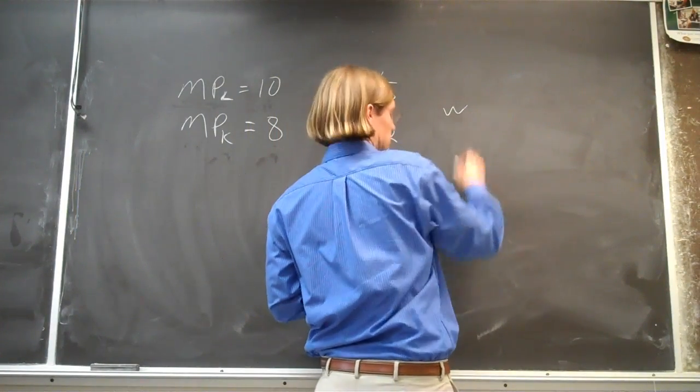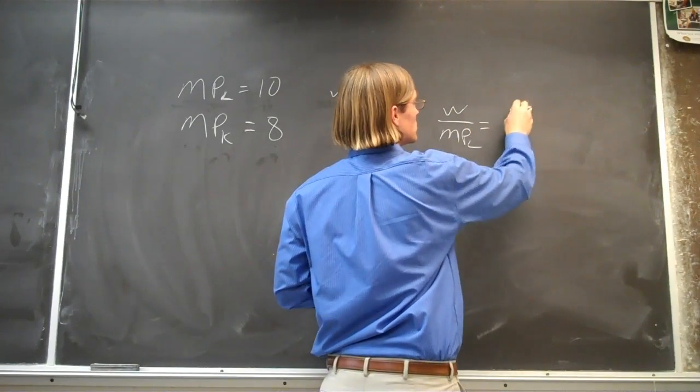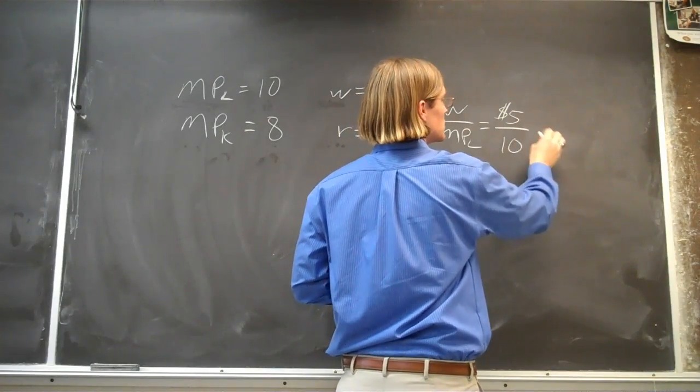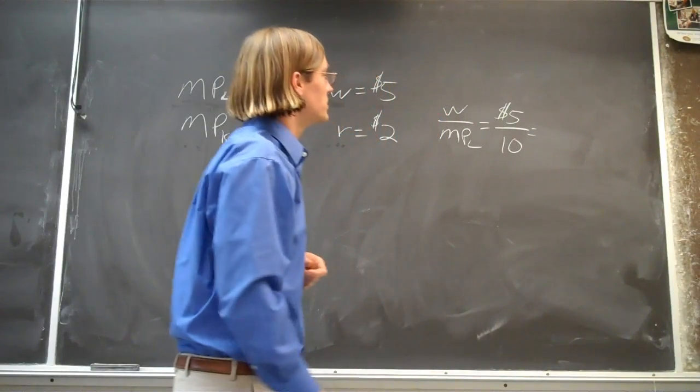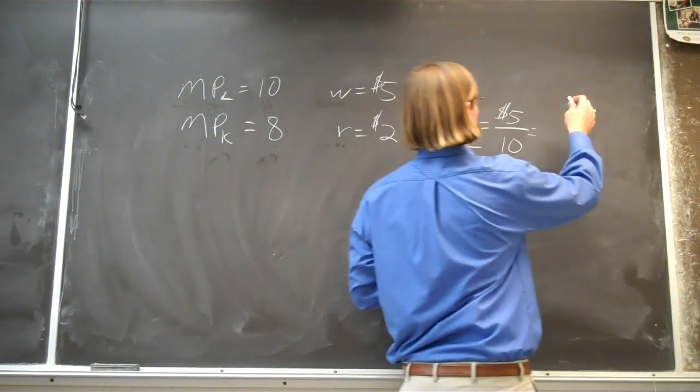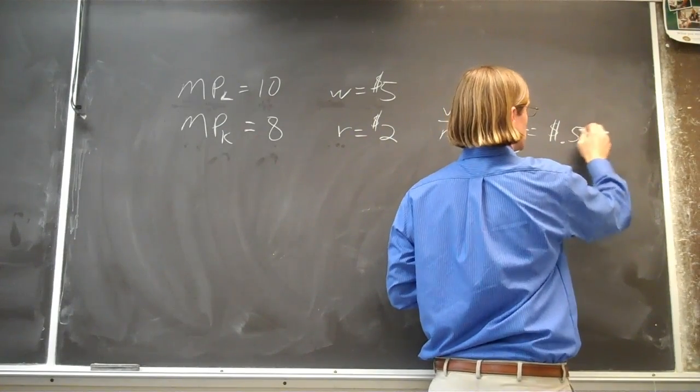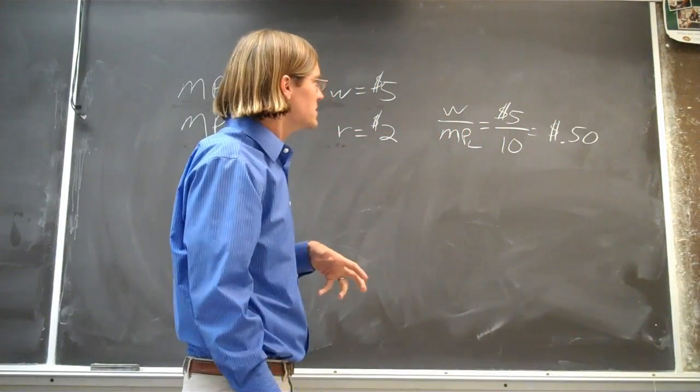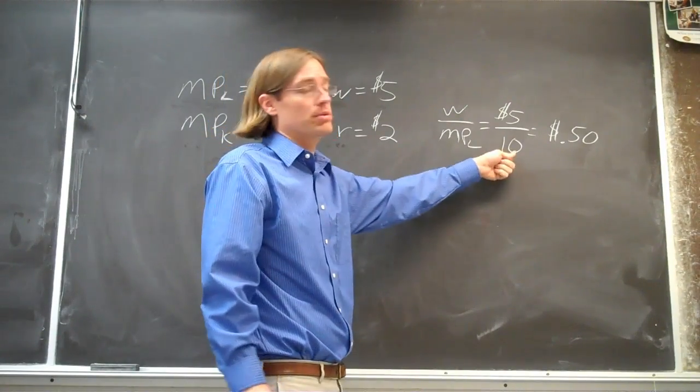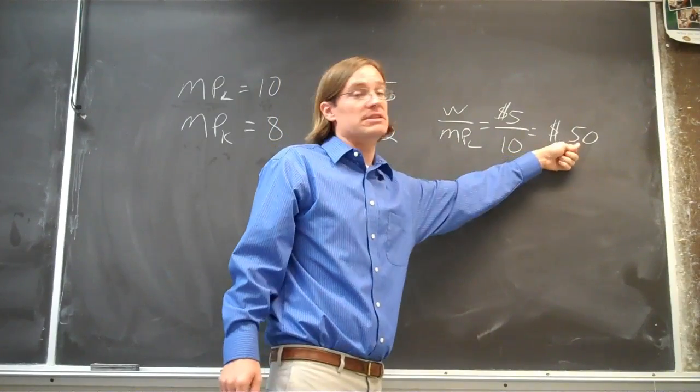If we divide our wages by the marginal product of labor, this says $5 divided by the 10 units, the 10 additional units we're going to get, that should give us 50 cents. So that says that to get that last unit of output, to get the very last unit, that marginal unit of output, it costs us 50 cents.